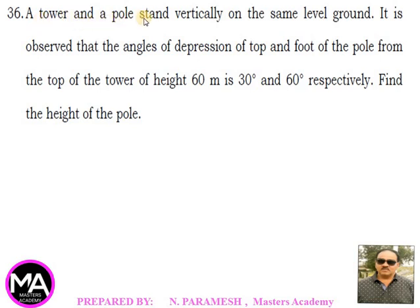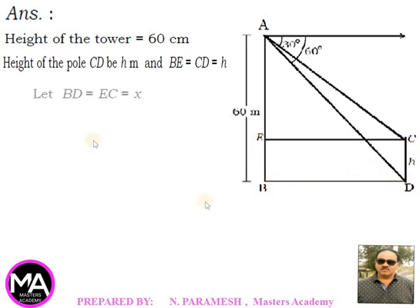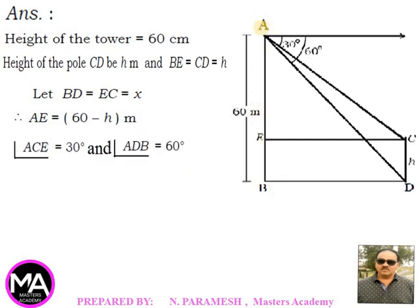36th question: A tower and a pole stand vertically on the same level ground. The angle of depression of the top and the foot of the pole from the top of the tower of height 60 meters is 30° and 60° respectively. Find the height of the pole. Height of tower AB = 60m, height of pole CD = h meters. BE = CD = h, so AE = 60 - h meters. Angle ACE = 30° and angle ADB = 60°.